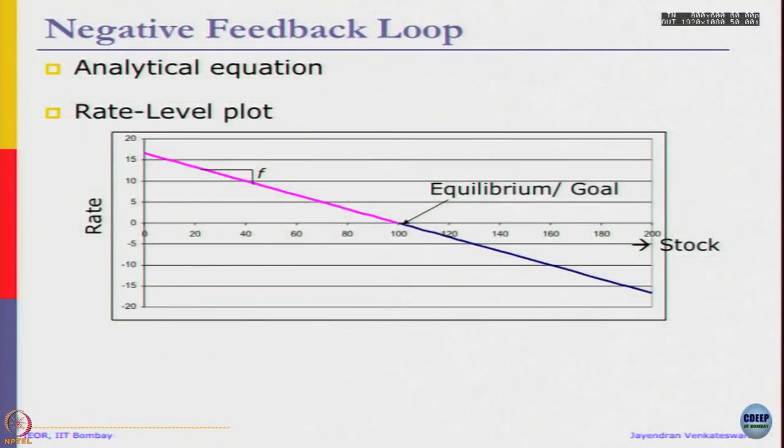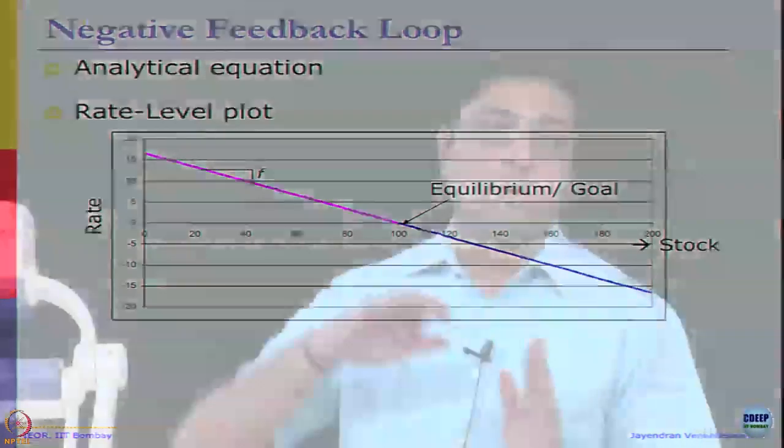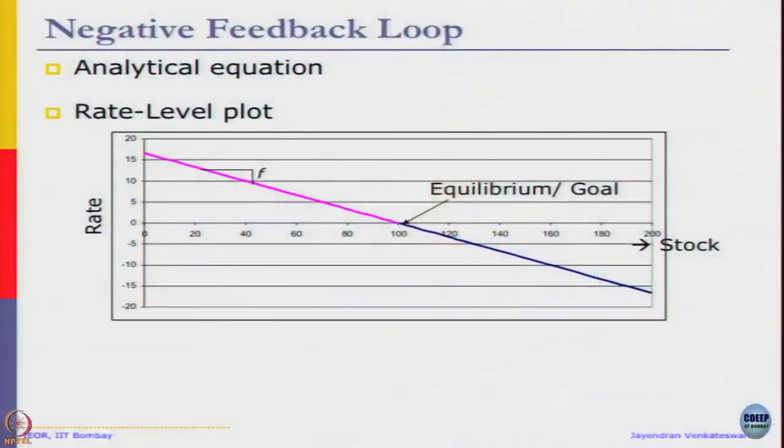Now we will ask: in rate-level plots we had the level on the x-axis and rate on the y-axis. If it has a positive slope then you will have exponential growth. This is a goal seeking system, so you have a negative slope. Here the equilibrium point is at 100 because 100 was the goal. The goal defines the equilibrium point.